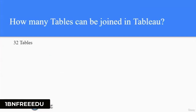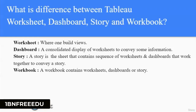Next question: How many tables can be joined in Tableau? In Tableau, a maximum of 32 tables can be joined. Next question: What is the difference between a Tableau worksheet, dashboard, story, and workbook? A worksheet is where you build your views. A dashboard consolidates all worksheets to display information. A story is a sequence of worksheets and dashboards that conveys a narrative. A workbook can contain worksheets, dashboards, or a story, or all of them.